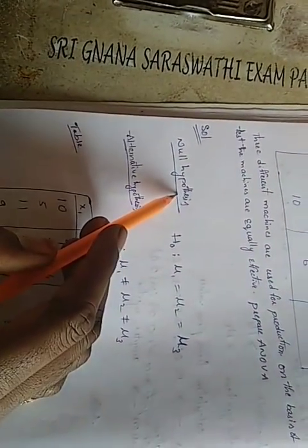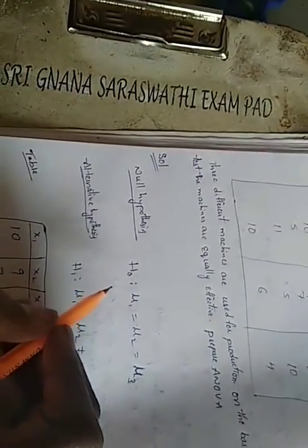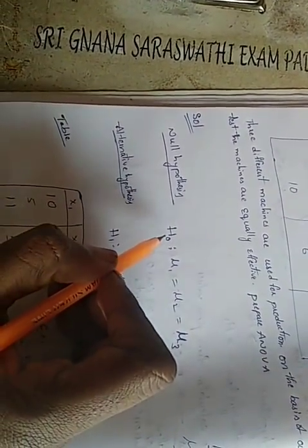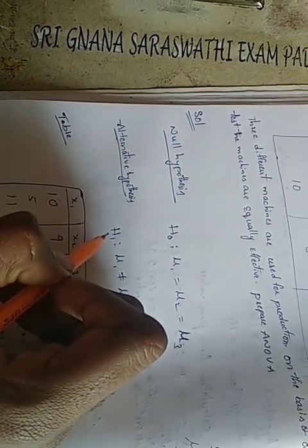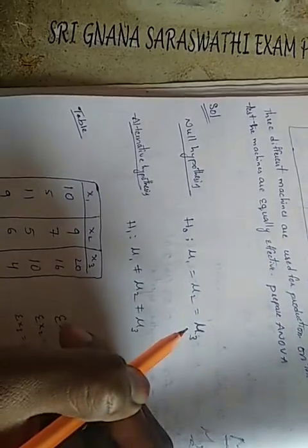First, state the null hypothesis and the alternative hypothesis. The null hypothesis H0 implies that mu one is equal to mu two, and mu two is equal to mu three — meaning all machines are equally effective. The alternative hypothesis H1 implies that mu one is not equal to mu two, and mu two is not equal to mu three — meaning at least one machine differs.